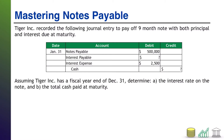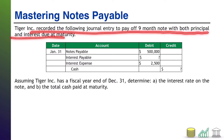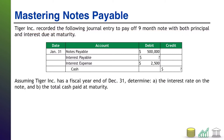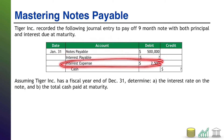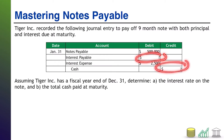Tiger Inc. recorded the following journal entry to pay off a nine-month note with both principal and interest due at maturity. Notes payable got paid off for $500,000. Interest expense was $2,500. I don't tell you what the interest payable was, and I don't tell you what the total cash was.